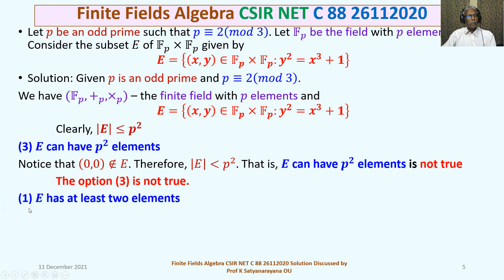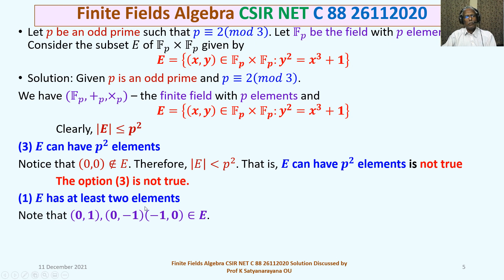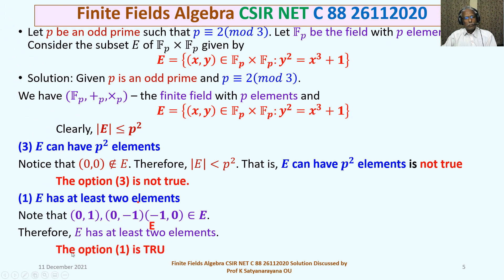Consider Option 1: E has at least 2 elements. Note that (0, 1) belongs to E — substituting x = 0 gives y² = 1, so y = ±1, meaning both (0, 1) and (0, −1) are in E. Also, substituting x = −1 gives y² = (−1)³ + 1 = 0, so y = 0 and (−1, 0) ∈ E. Thus E contains at least three elements, confirming Option 1 is true.